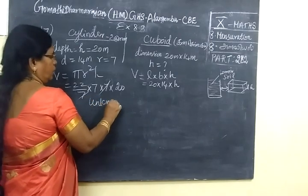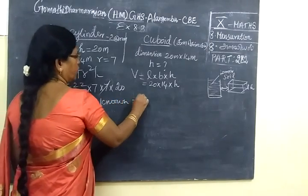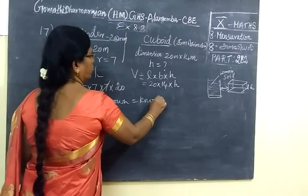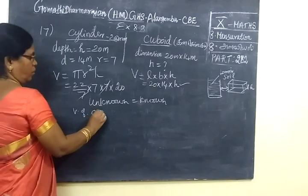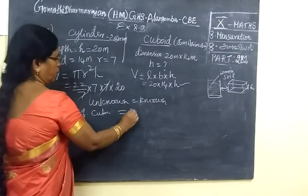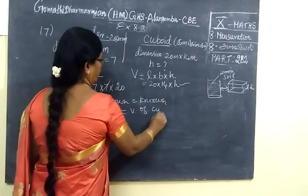Here, you are writing unknown equal to known. You will unknown one to the height. So, you are writing volume of cube equal to volume of cylinder.